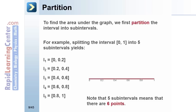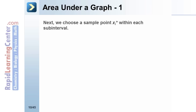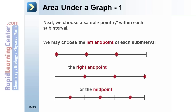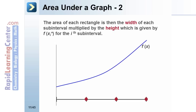Note that five sub-intervals means that there are six points. Next, we choose a sample point x sub i star within each sub-interval. We may choose the left endpoint of each sub-interval, the right endpoint, or the midpoint. The area of each rectangle is then the width of each sub-interval multiplied by the height, which is given by f of x sub i star for the i-th sub-interval.